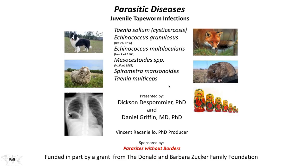We'll also discuss Echinococcus granulosus, the dog tapeworm — and in this case we mean it, this tapeworm actually infects dogs — Echinococcus multilocularis, which is an infection of foxes, Mesocestoides, an infection of most predaceous mammals, Spirometra mansonoides, a parasite not so common but with serious clinical consequences, and finally a Taenia called Taenia multiceps.